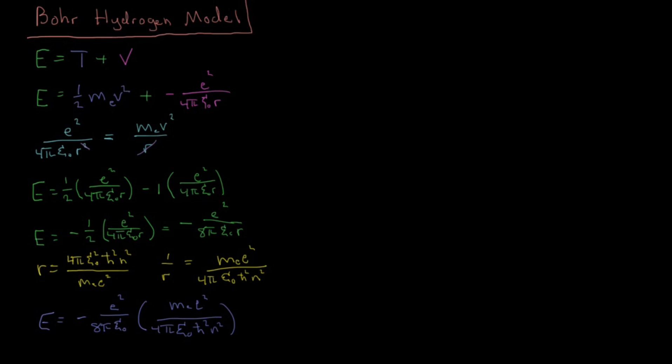The final expression we get is E equals E to the fourth over 32 pi squared epsilon naught squared h-bar squared, times 1 over n squared, where n is just indicating the different energy levels which are available to us.